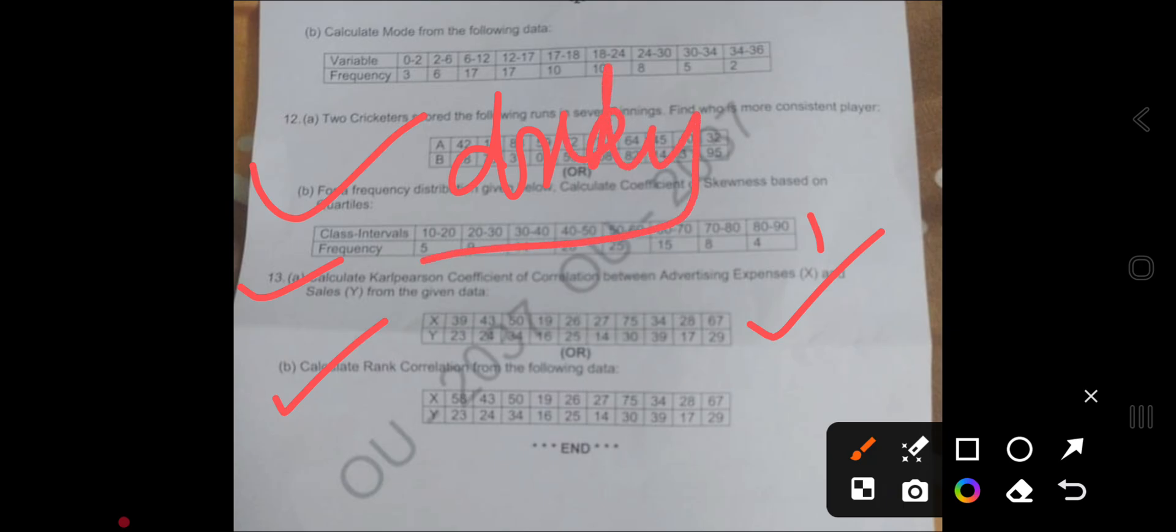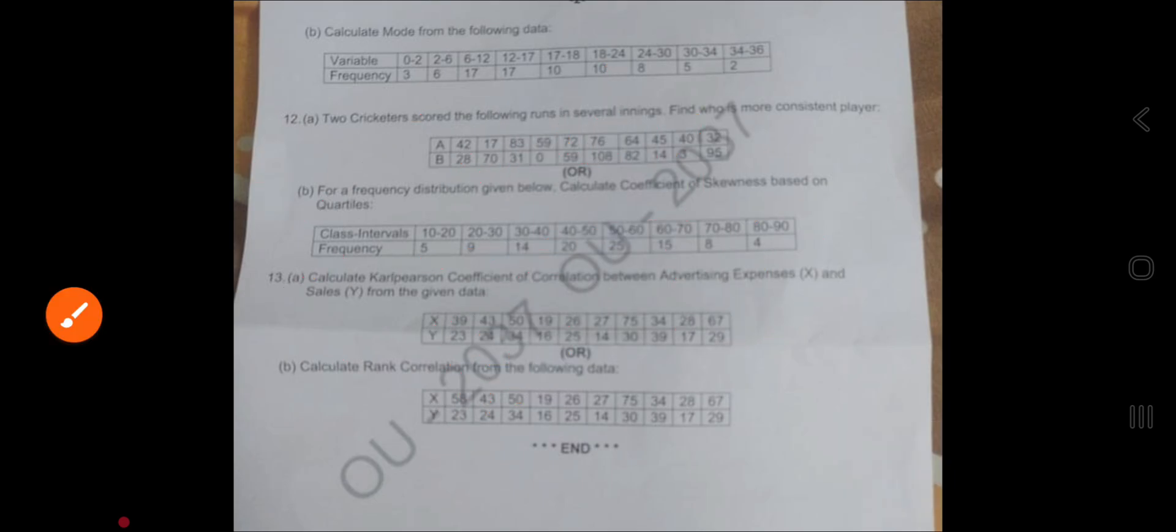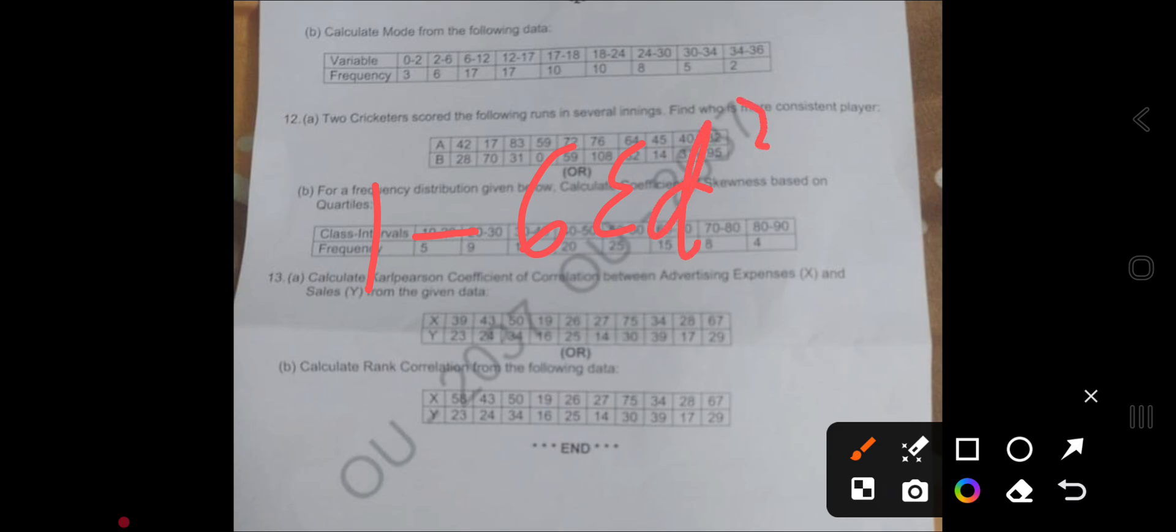The last unit, Unit 5, we discussed Karl Pearson correlation and rank correlation. Most easiest is Karl Pearson correlation. What is the formula? Sigma dx dy divided by under root sigma dx square into under root sigma dy square.